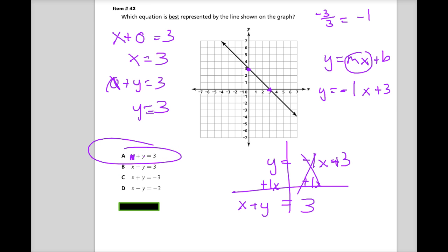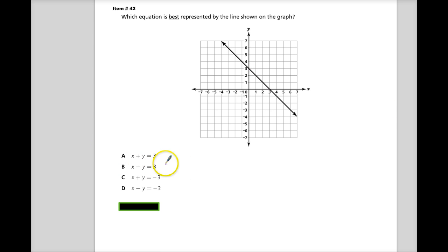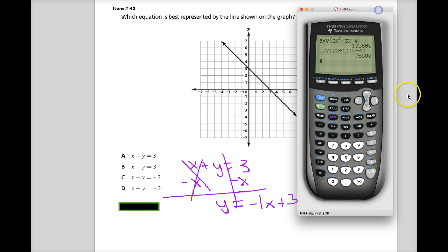The overly complicated method is convert all of these into slope-intercept form. Even though in this case, since it's A, it wouldn't be that hard. Minus X. Can't combine these two, and you get that.